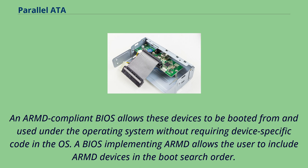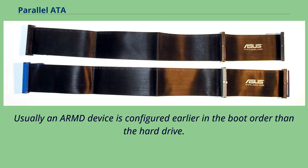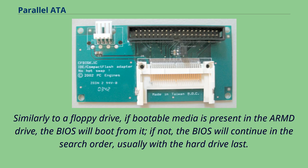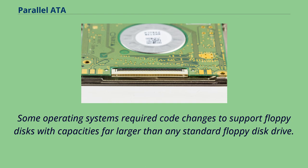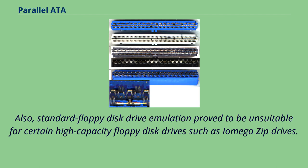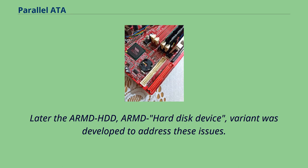A BIOS implementing ARMD allows the user to include ARMD devices in the boot search order. Usually an ARMD device is configured earlier in the boot order than the hard drive. Similarly to a floppy drive, if bootable media is present in the ARMD drive, the BIOS will boot from it; if not, the BIOS will continue in the search order, usually with the hard drive last. There are two variants of ARMD: ARMD-FDD and ARMD-HDD. Originally, ARMD caused the devices to appear as a sort of very large floppy drive, either the primary floppy drive device 00H or the secondary device 01H. Some operating systems required code changes to support floppy disks with capacities far larger than any standard floppy disk drive. Also, standard floppy disk drive emulation proved to be unsuitable for certain high-capacity floppy disk drives such as Iomega Zip drives. Later, the ARMD-HDD variant was developed to address these issues; under ARMD-HDD, an ARMD device appears to the BIOS and the operating system as a hard drive.